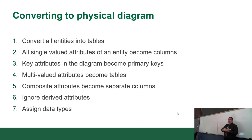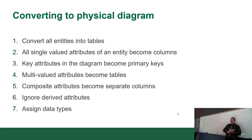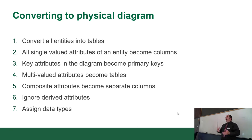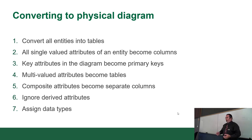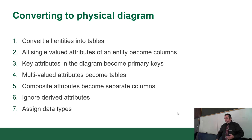Steps to convert to physical design: take all entities and convert them to tables; single-valued attributes become columns; key attributes become primary keys; multi-valued attributes become their own tables; composite attributes are broken into separate columns; ignore derived attributes; and start assigning data types.